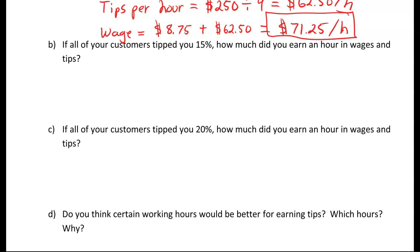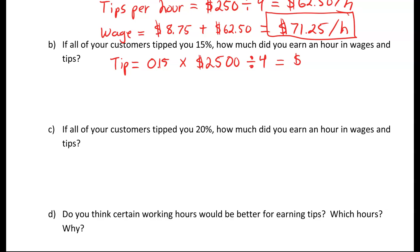In example B and C, we're going to continue with this calculation but look at if they were tipped 15% and also 20%, to show how much a difference it makes to the service industry based on how much the person is tipping. To calculate the tip at 15%, I'm going to turn that into a decimal, which is 0.15, multiplied by $2,500, and then divide by 4 to get our hourly rate. Following order of operations left to right, our total tip per hour will be $93.75.